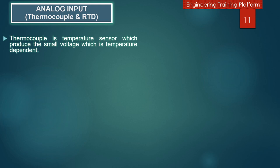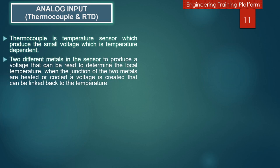A thermocouple is a temperature sensor which produces a small voltage that is temperature dependent. It consists of two different types of metals joined together at one end. When the junction of the two metals is heated or cooled, a voltage is created that can be linked back to the temperature. A thermocouple is a simple, robust, and cost-effective temperature sensor used in a wide range of temperature measurement processes. Thermocouples are manufactured in a variety of styles such as thermocouple probes, thermocouple probes with connectors, transition joint thermocouple probes, infrared thermocouples, bare wire thermocouples, or even just thermocouple wire.